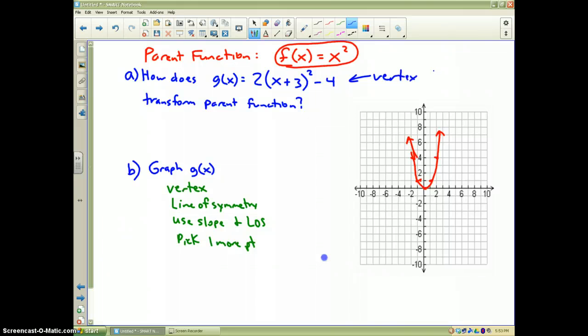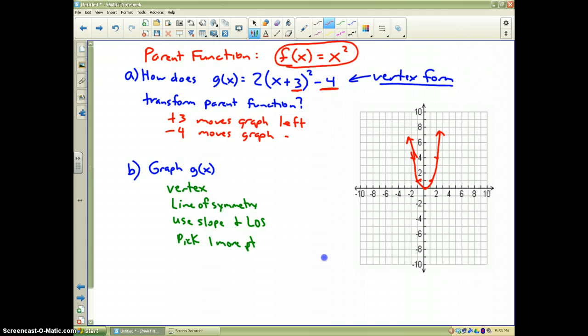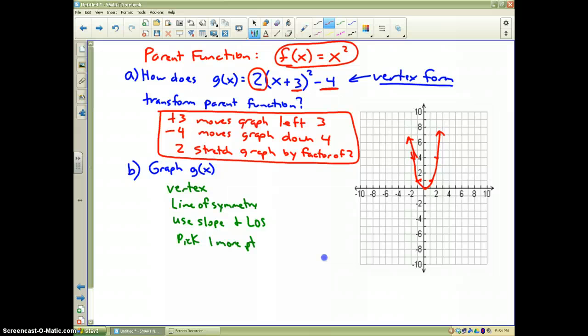That's handy for us. Because right away, you can tell that the plus 3 moves the graph to the left. The minus 4 moves the graph down 4. And the 2 on the outside, the 2 will stretch the graph by a factor of 2. So that would be what you would list for how does it transform the graph. That is how it's going to affect our red graph of our parent function.